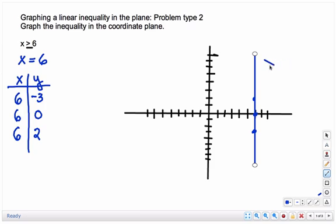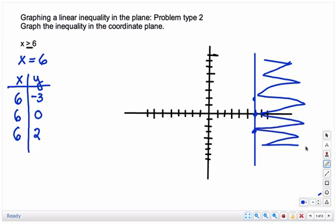If x is less than, you would shade to the left of the line. Think about that for a little bit.